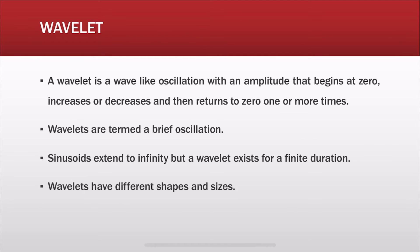In order to perform a wavelet transform analysis, you need something called a wavelet. A wavelet is a wave-like oscillation with an amplitude that begins at zero, increases or decreases, and then returns to zero one or more times. Wavelets are termed a brief oscillation — they're finite. Sinusoids extend to infinity, but wavelets exist for a finite duration.